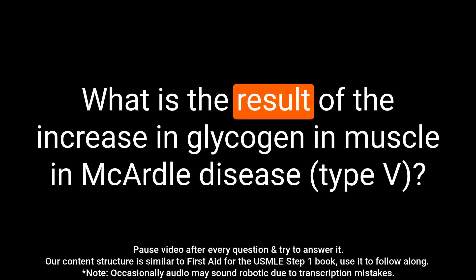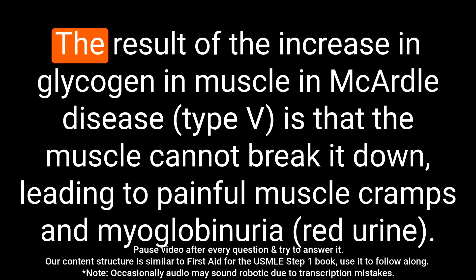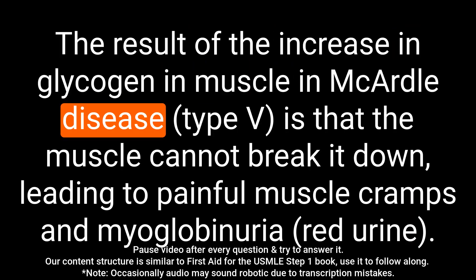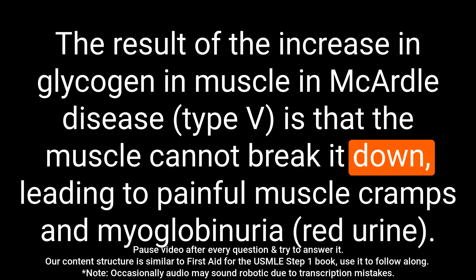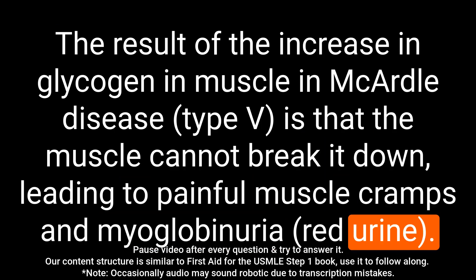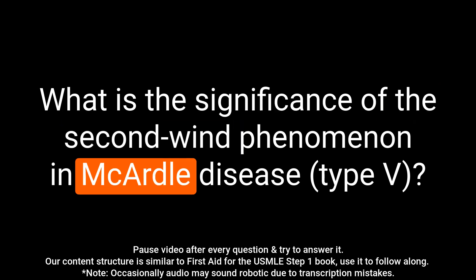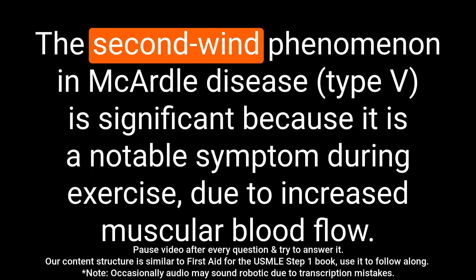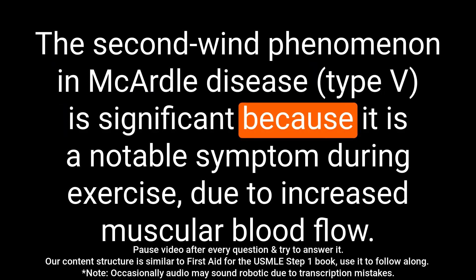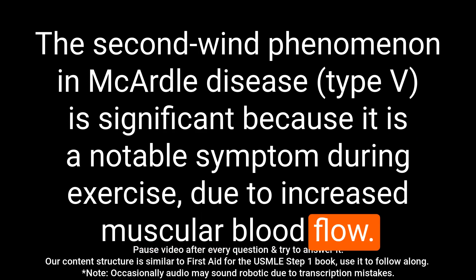Question: What is the result of the increase in glycogen in muscle in McArdle disease? Answer: The result is that the muscle cannot break it down, leading to painful muscle cramps and myoglobinuria. Question: What is the significance of the second wind phenomenon in McArdle disease? Answer: The second wind phenomenon is significant because it is a notable symptom during exercise due to increased muscular blood flow.